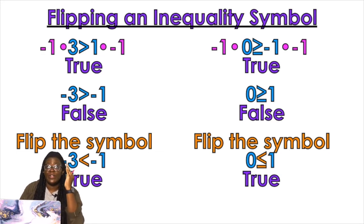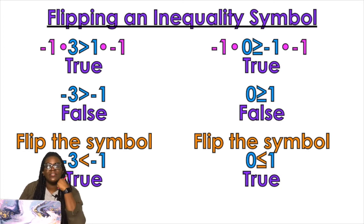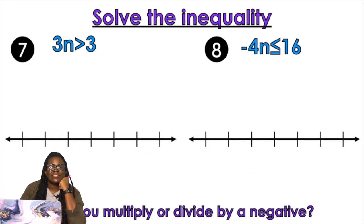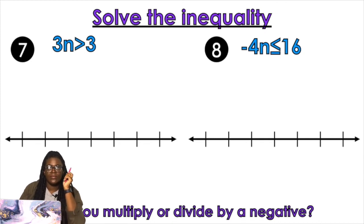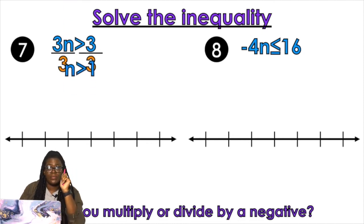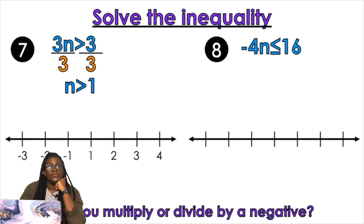This is why we flip the symbol. When you wonder why we make up these weird rules in math, they have a reason — and that's the reason. Solving inequality: I have 3n is greater than 3. To get n by itself, divide by 3 on both sides. N is greater than 1. Open circle or closed circle? Open. Left or right? Right.